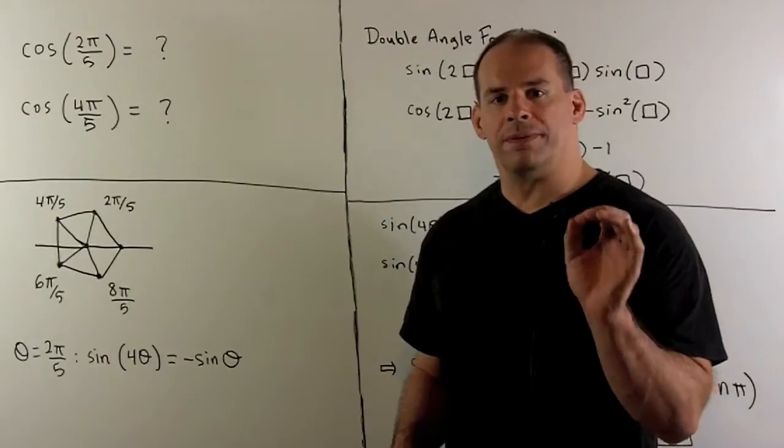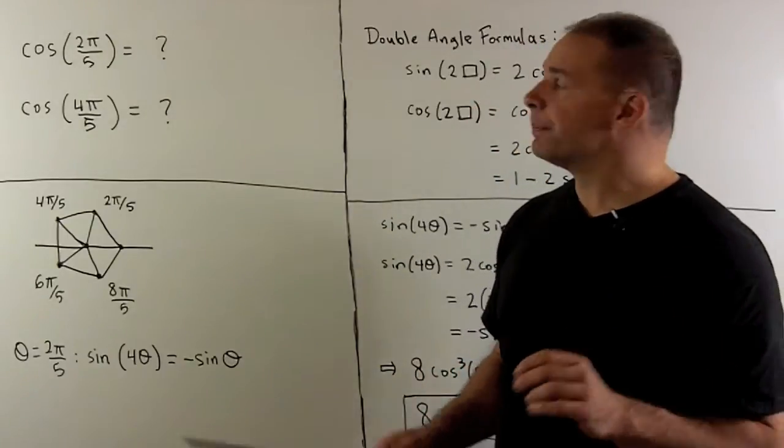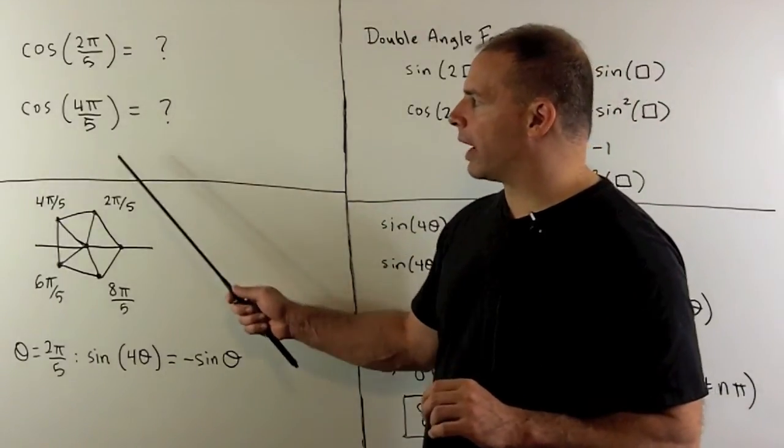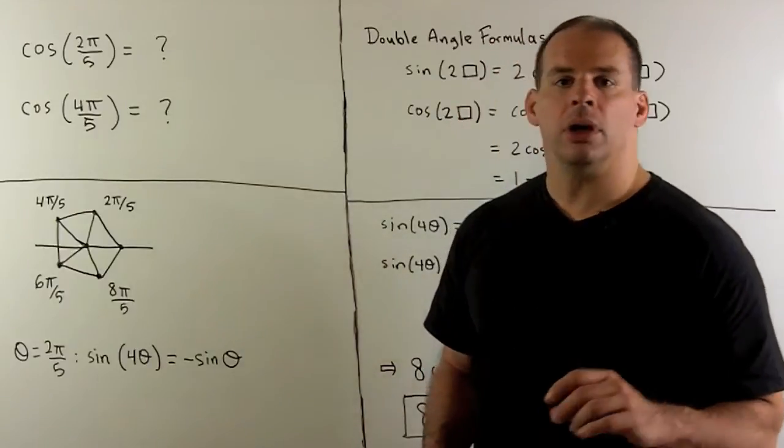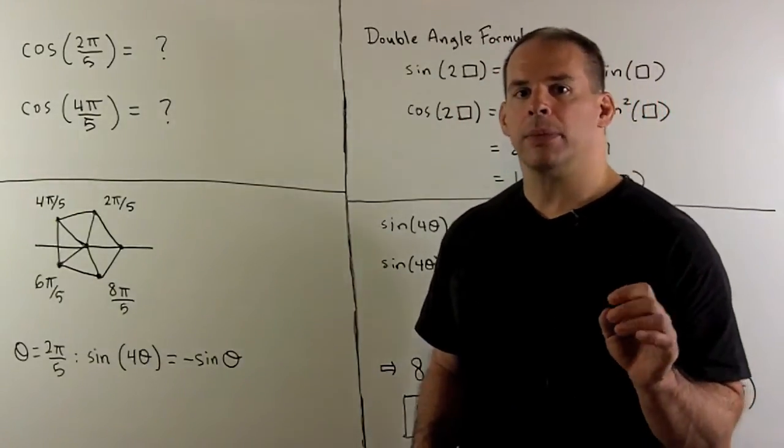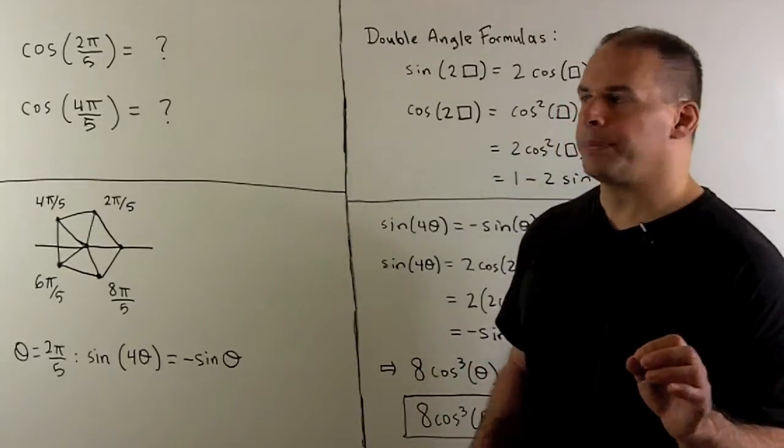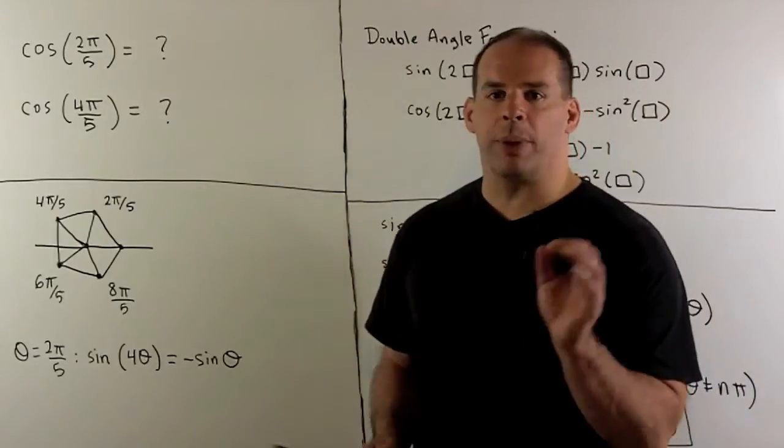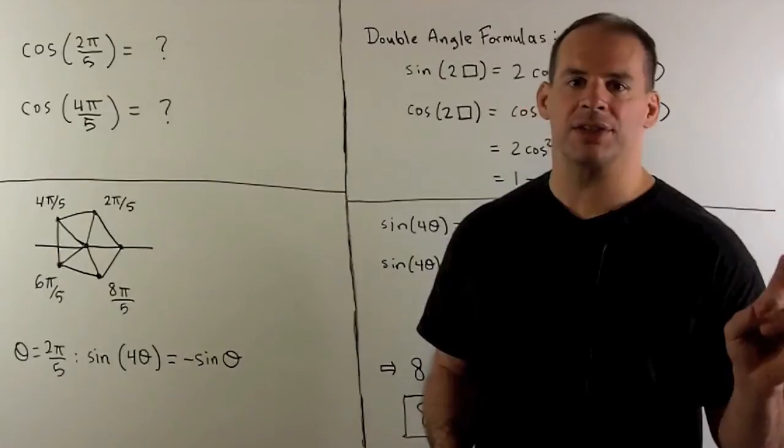For this talk, we find the values of cosine and sine for 2π/5 and 4π/5. Our interest in these values is twofold. First, from the point of view of trigonometry, we know cosine and sine for π/3, π/4, π/6.